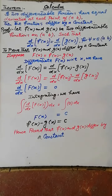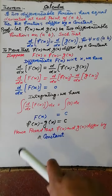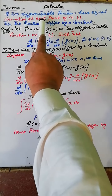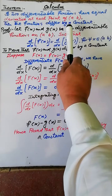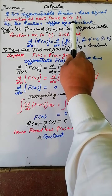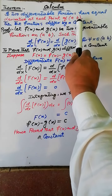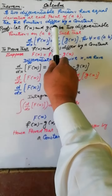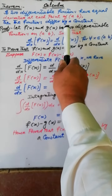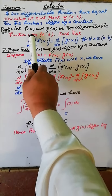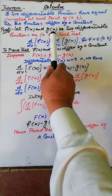Next topic: theorem. If two differentiable functions have equal derivatives on each point of the open interval with inputs a and b, then the functions differ by a constant. Suppose f(x) and g(x)